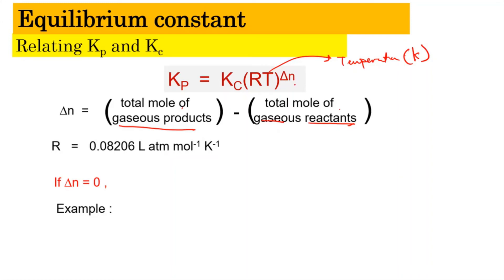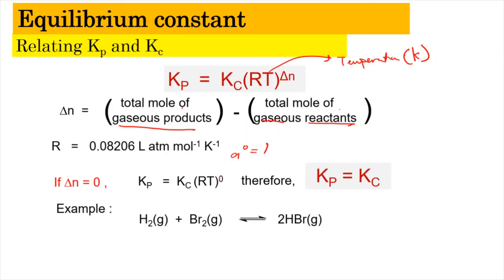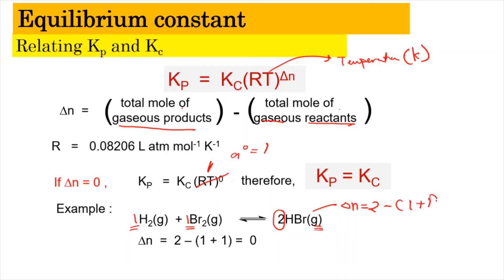If ΔN equals 0, then (RT)^0 = 1, and therefore Kp = Kc. We can verify this with an example: if the gaseous products give 2 moles and the gaseous reactants give 1 + 1 = 2 moles, then ΔN = 2 − 2 = 0. So when ΔN = 0, we can immediately conclude that Kp equals Kc.